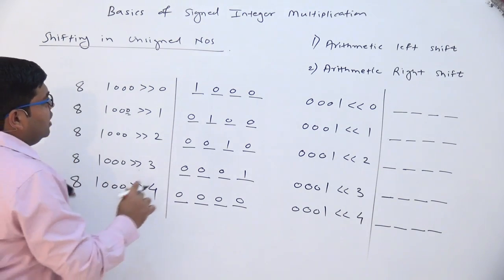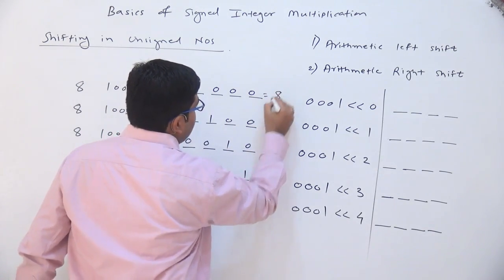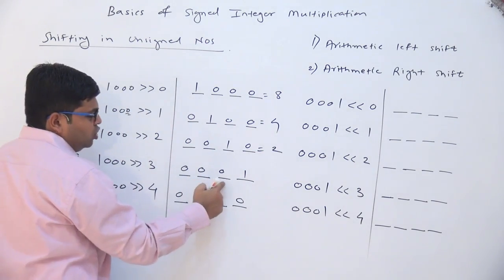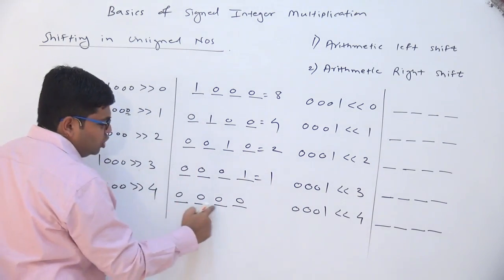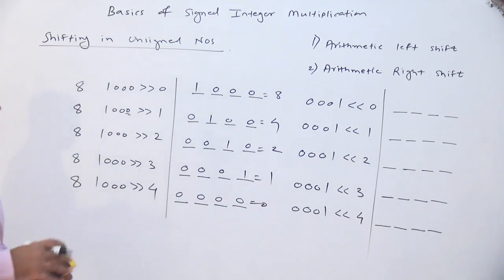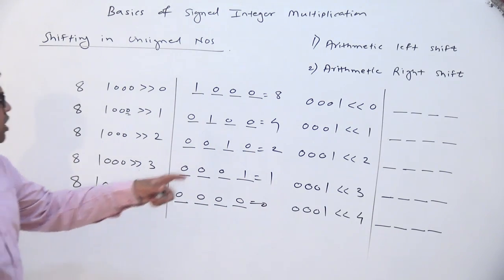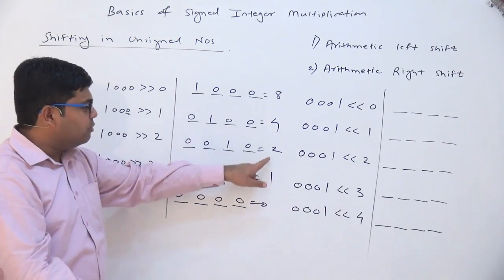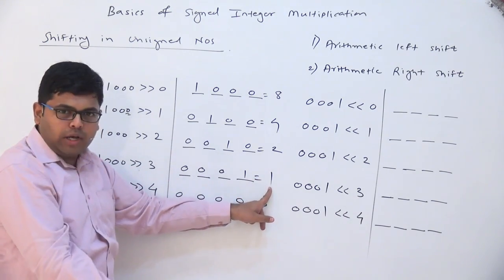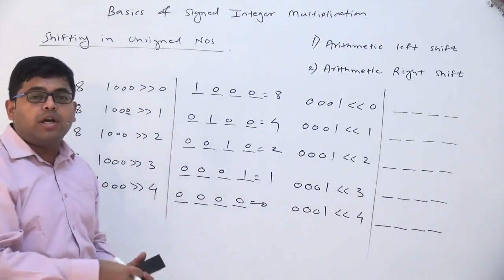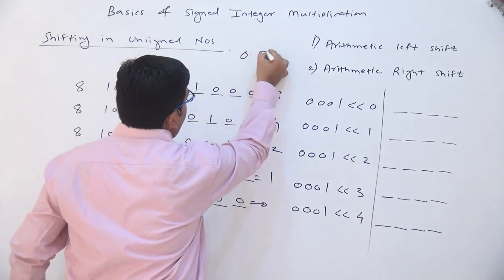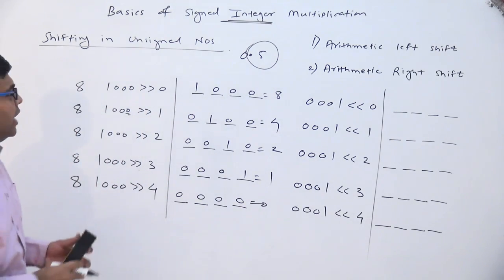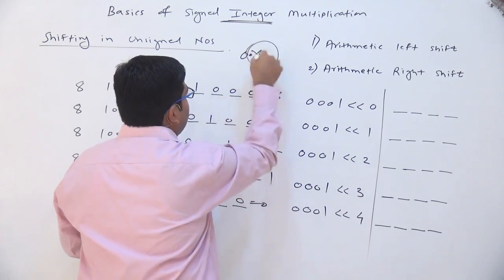The value of 1 0 0 0 is 8. Here 0 1 0 0 is equal to 2, 0 0 0 1 is equal to 1, and 0 0 0 0 is equal to 0. So the observation is: when you shift to the right by 1 place, the value gets divided by 2. So 8 right shifted by 1 position becomes 4, then 2, then 1. 1 right shifted by 1 position should become 0.5, but we are having integer representation so 0.5 cannot be represented and the decimal part will be truncated.